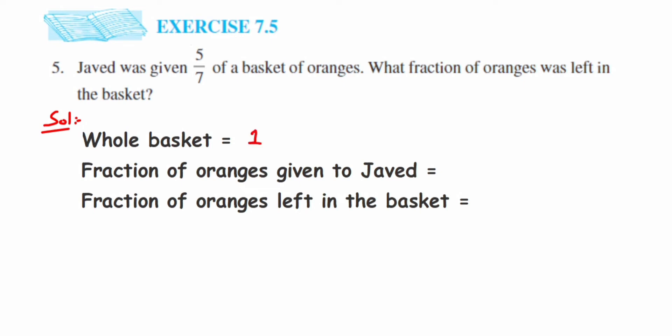Or you can simply write 1 because 7/7 cancels to get 1. He was given 5/7 basket of oranges. The question asks how much is left, meaning the remaining oranges. So from the whole basket, we have to subtract the fraction he was given.